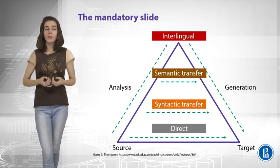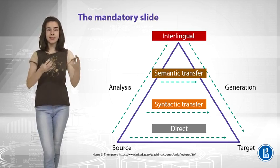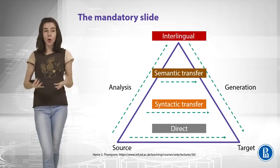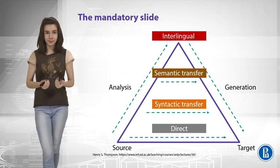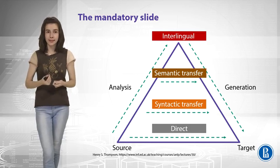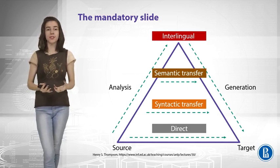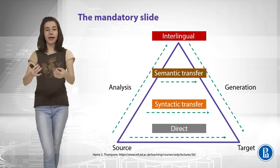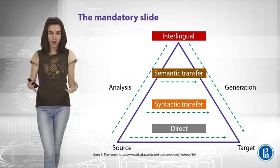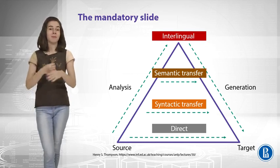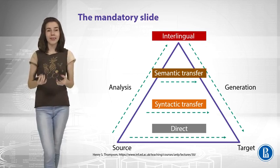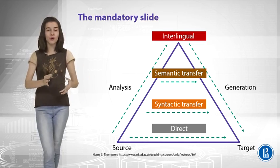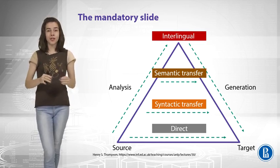Probably we would do better at the syntactic level — we do syntactic analysis, then transfer, then generate the target sentence based on its syntactic structure. Even better, we could try to go to the semantic layer: analyze the source sentence, understand the meanings, transfer them to another language, and generate good syntactic structures with correct meaning. Our dream would be having some interlingua — a universal representation of the source sentence that is sufficient to generate the entire target sentence.